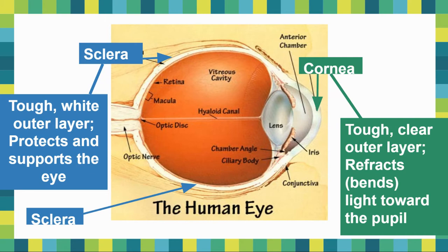Those are the two outer structures of your eye, both very important for protection. If you get anything on your cornea or scratch it, you're going to have a hard time seeing because it will be blurry. If you damage the sclera, you could get a tear which could be dangerous because things could enter your eye.